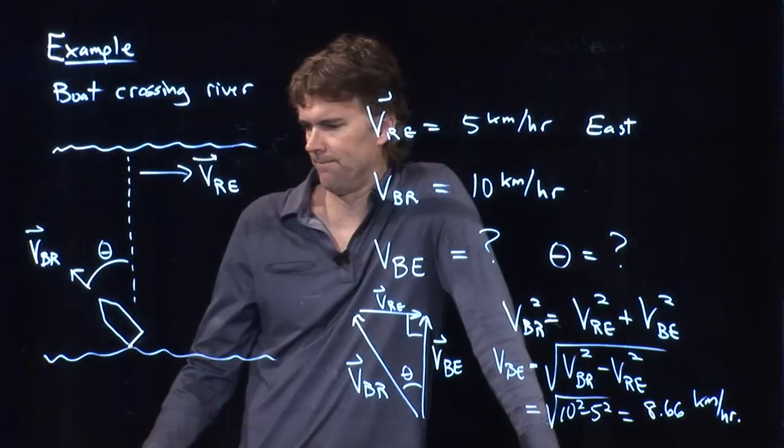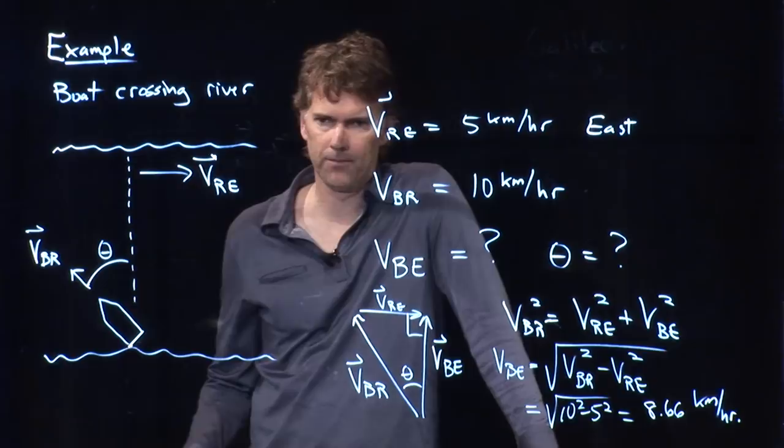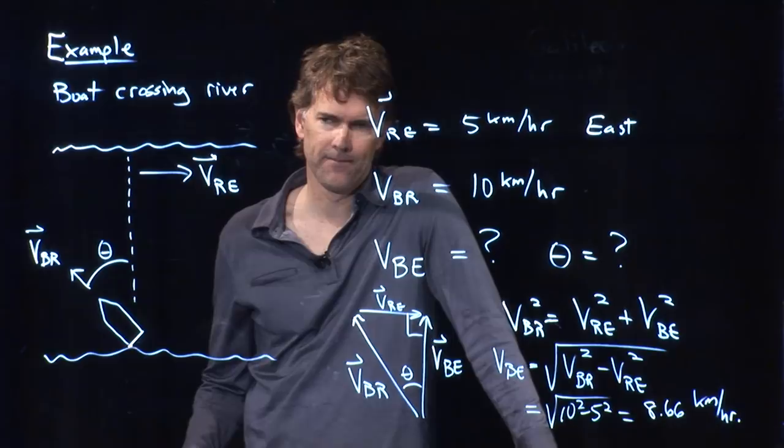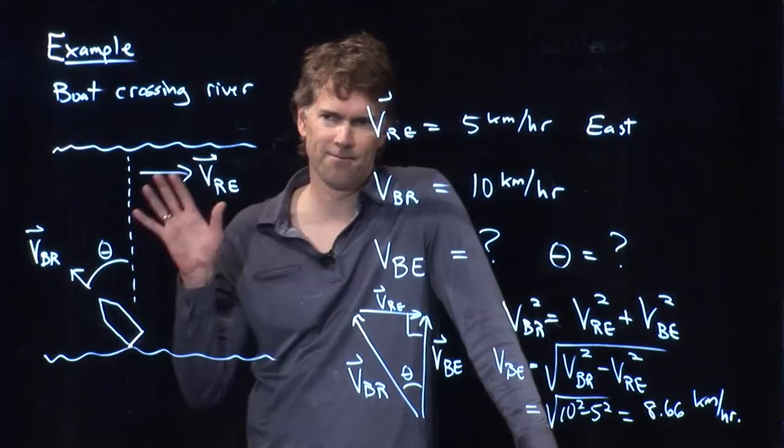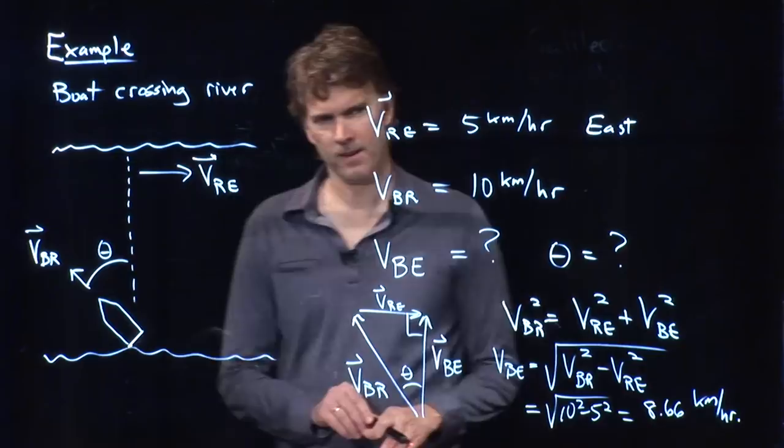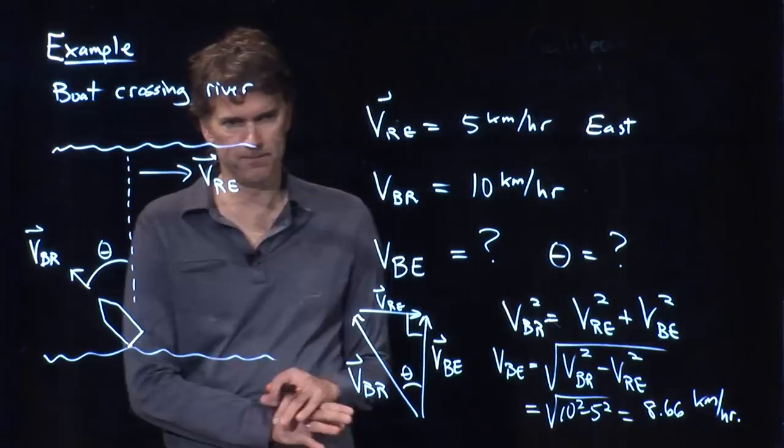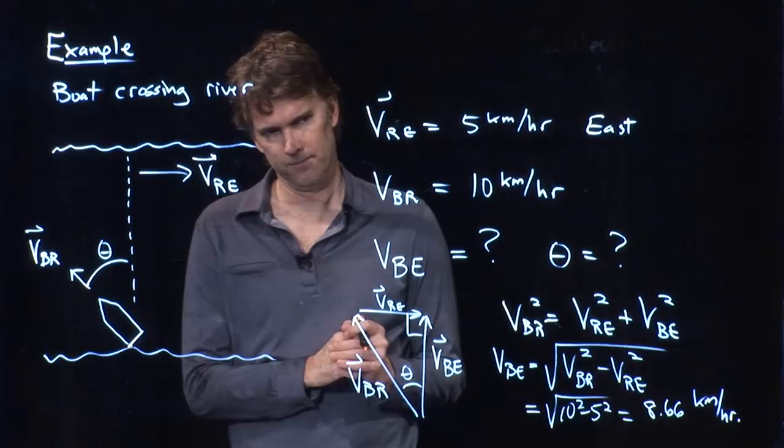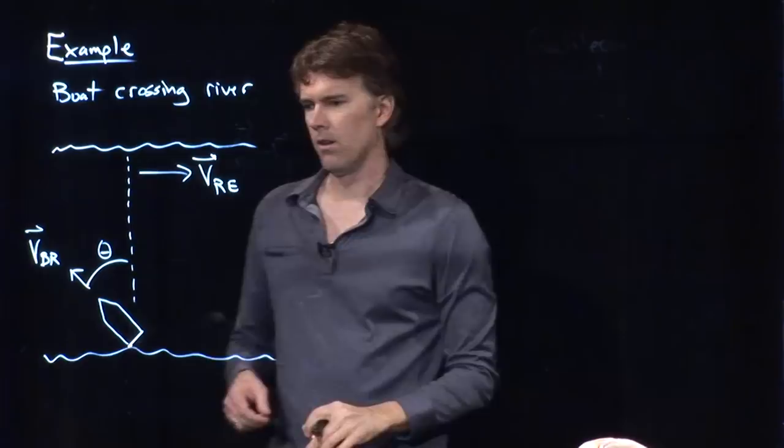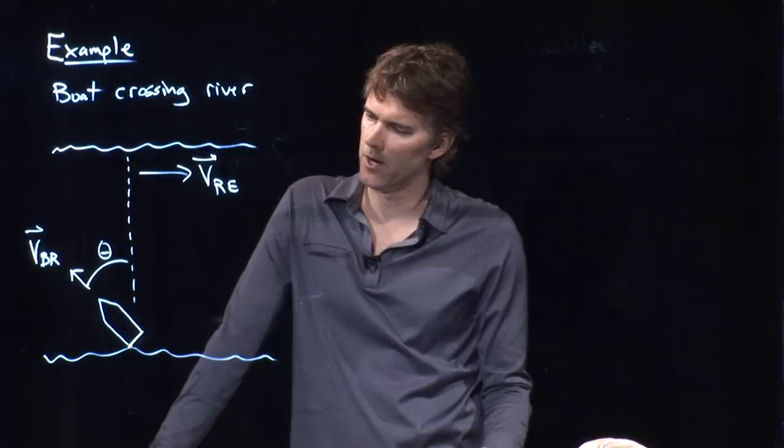Before we think about the second part, theta, is there some other way we could do this problem? Anybody have another thought on how to do this problem? Anybody? Okay, Ian, yeah, what do you think? How else could we do this problem? I would use trigonometry. Okay, so what would you do with trigonometry? I would take the velocity of the boat relative to the river and either use sine or cosine. Okay, excellent idea. Yes, let's try that. Okay, so Ian's suggesting that we go back to the original picture and we do a little trig using sines or cosines. Let's try that, right?